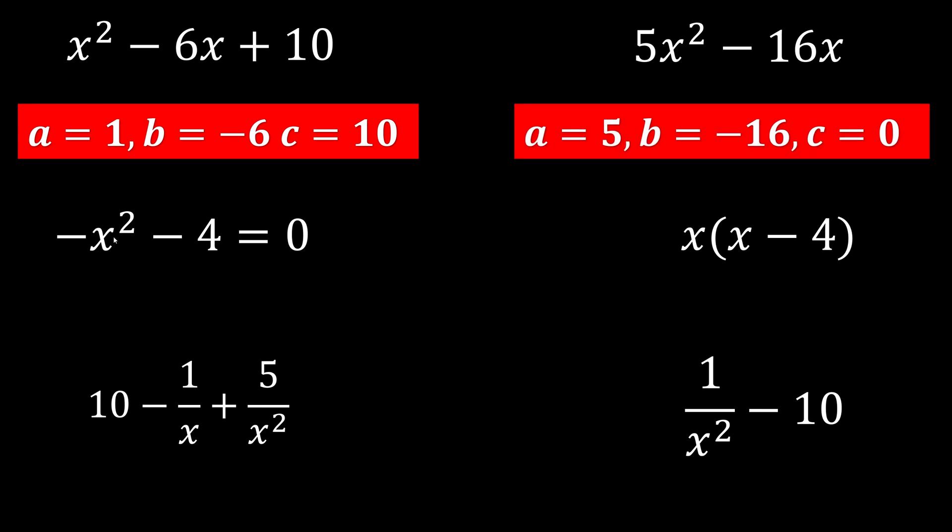How about now when we have no x at all? If there is no x, we say that there is 0x. This is why we have a is negative 1, b is 0, and the constant is negative 4.